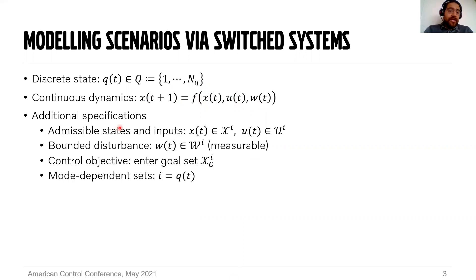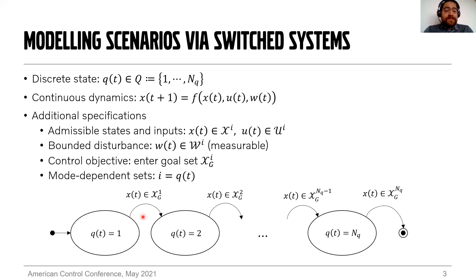We have additional specifications that shape the test scenario: sets of admissible states and inputs to represent actuator constraints and possibly safety constraints, and bounds on the unknown disturbance, which we assume to be bounded and measurable, but whose future values remain unknown to the controller. The control objective is specified as making the continuous state X reach or enter certain goal sets XG for the different operating modes. All of these sets are mode-dependent, specified by the current operating mode Q. We focus on switching systems where the discrete state Q increases monotonically from one to the last operating mode, with switches occurring when the continuous state X enters the goal set.